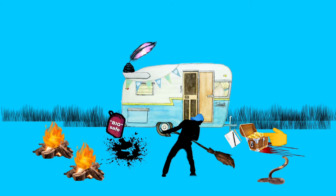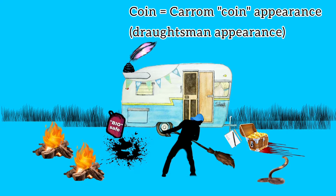There are also a lot of gold coins in the treasure. The gold coins can be compared to the carom coin appearance of the colony of these bacteria, which is also called draughtsman appearance.